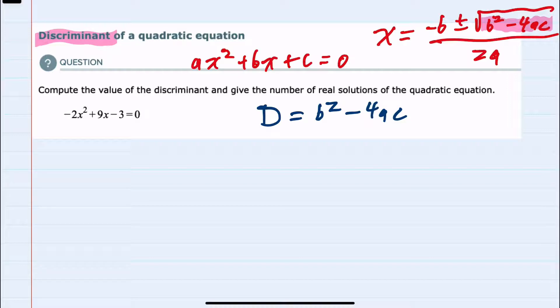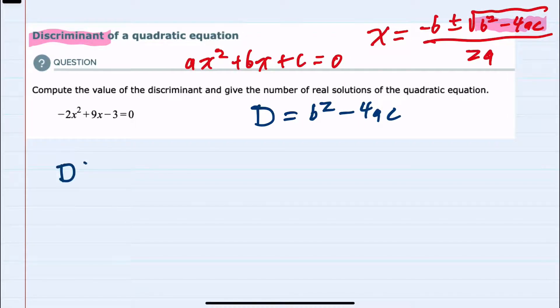When we calculate the discriminant, if this turns out to be a positive number, then we'll be able to take the square root of a positive number. And so when D is greater than 0, we will end up with two solutions. If the discriminant turns out to be 0, then we're adding and subtracting the square root of 0. Adding and subtracting 0 isn't going to change anything, so we would only end up with one solution.